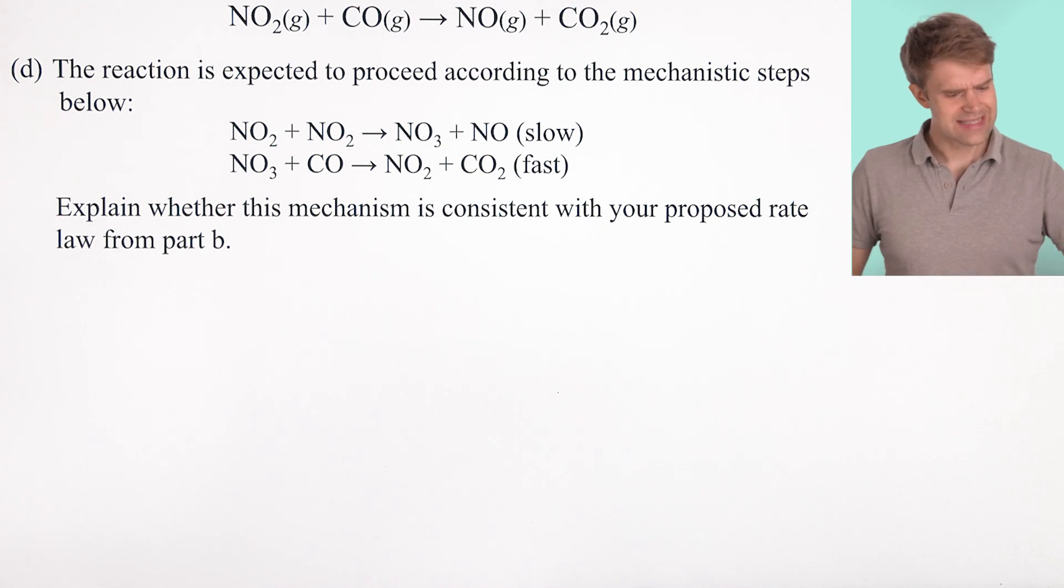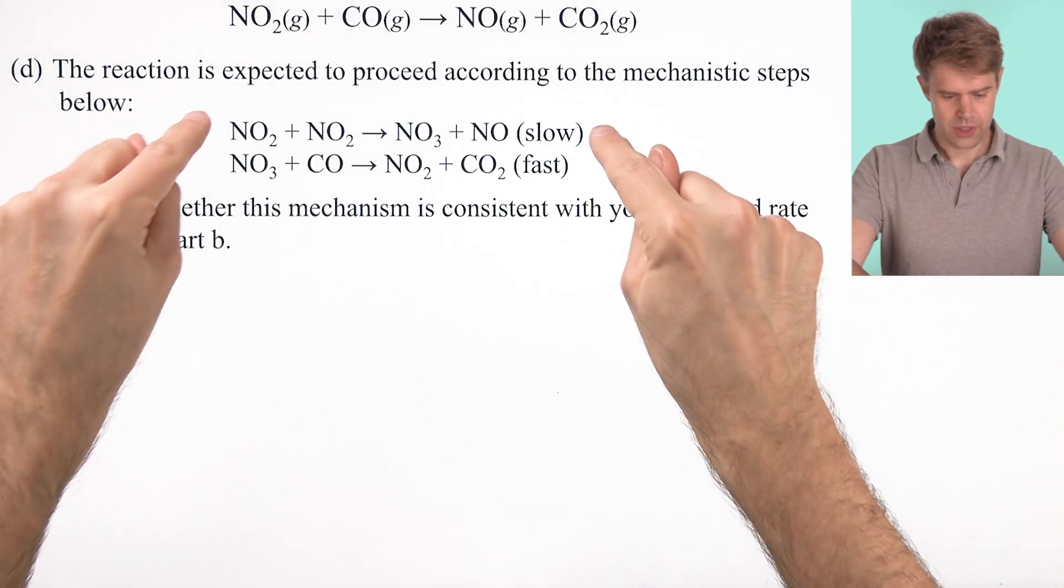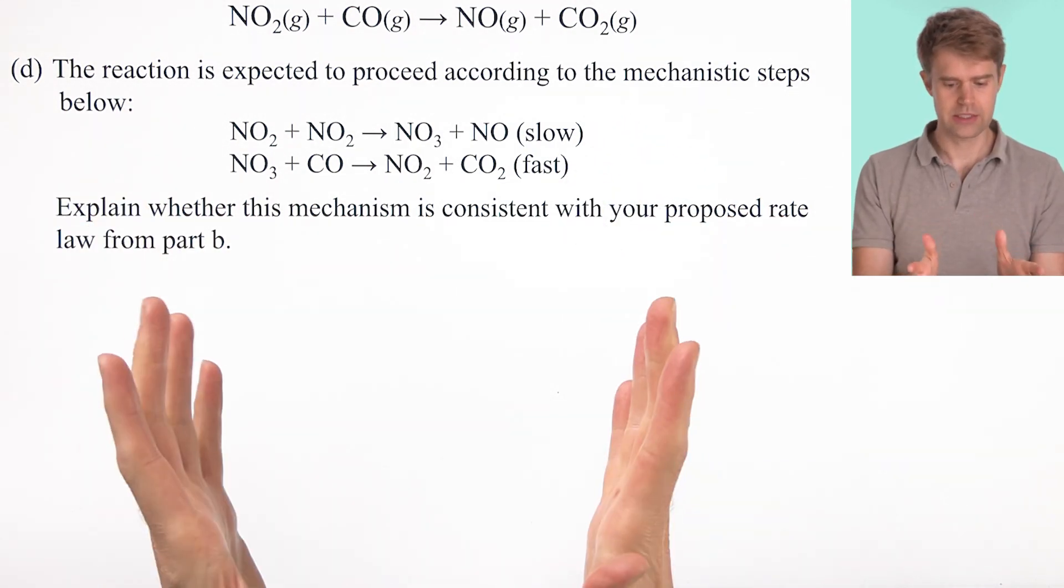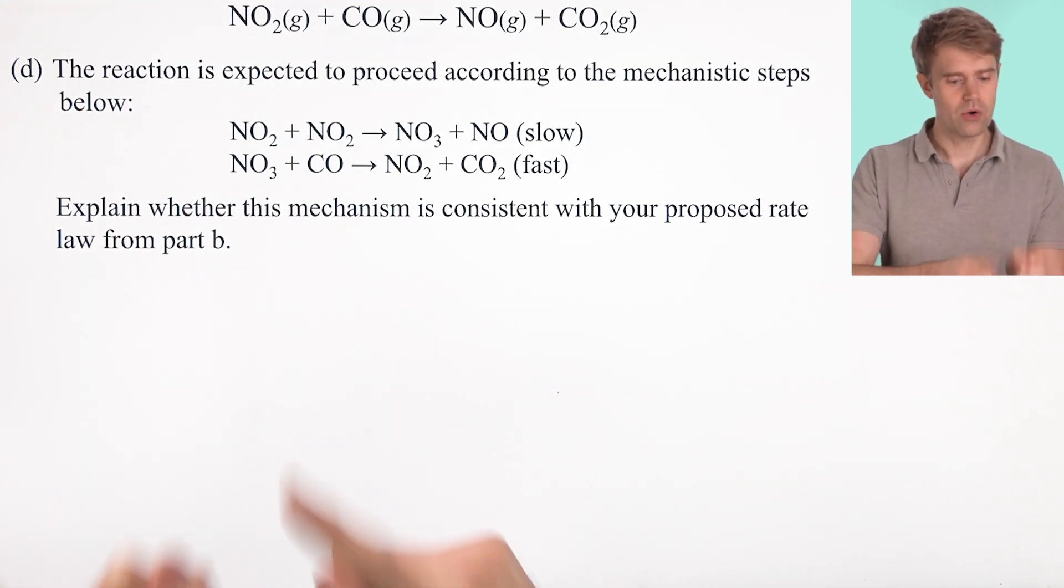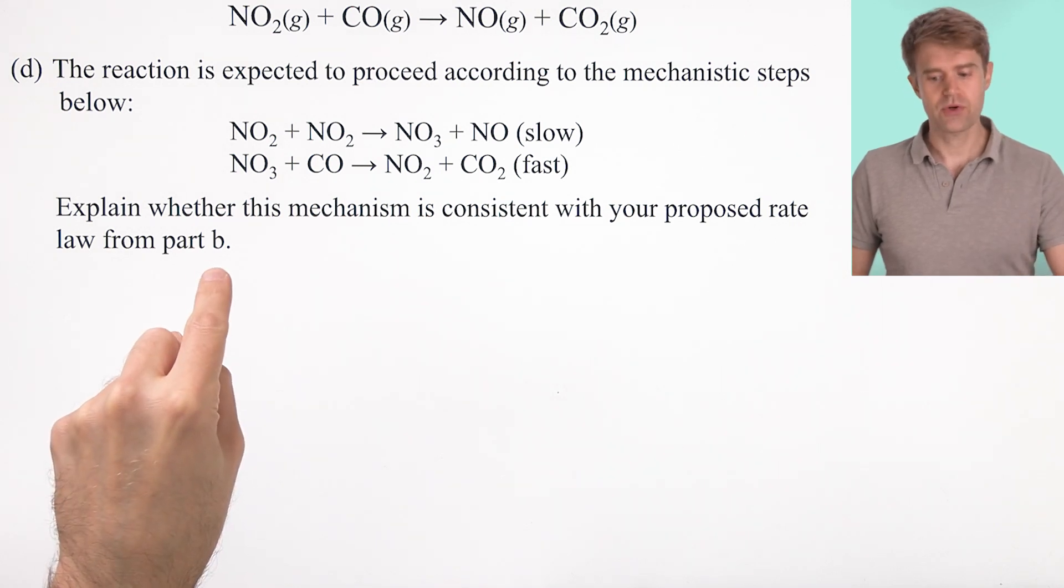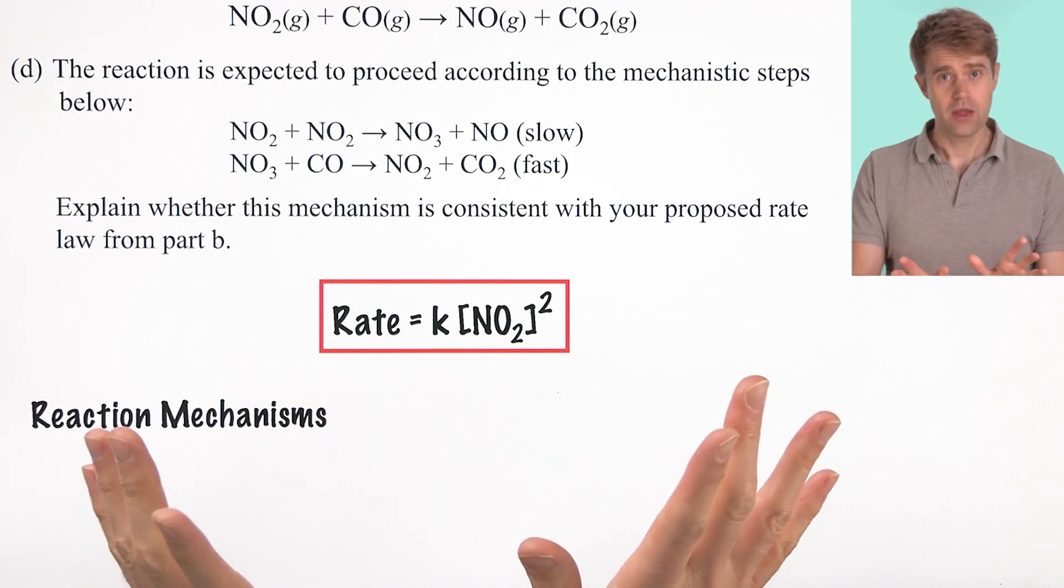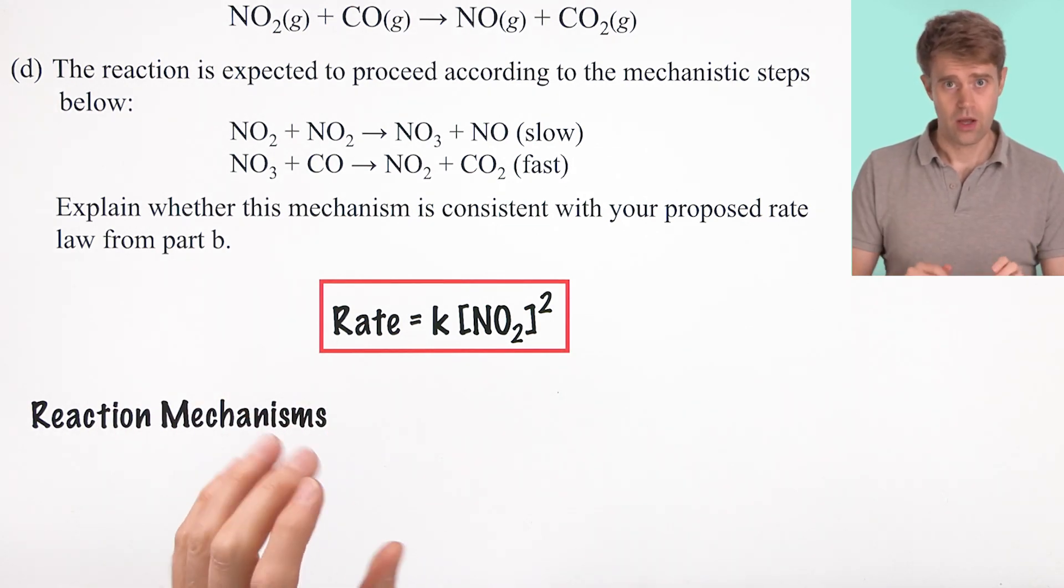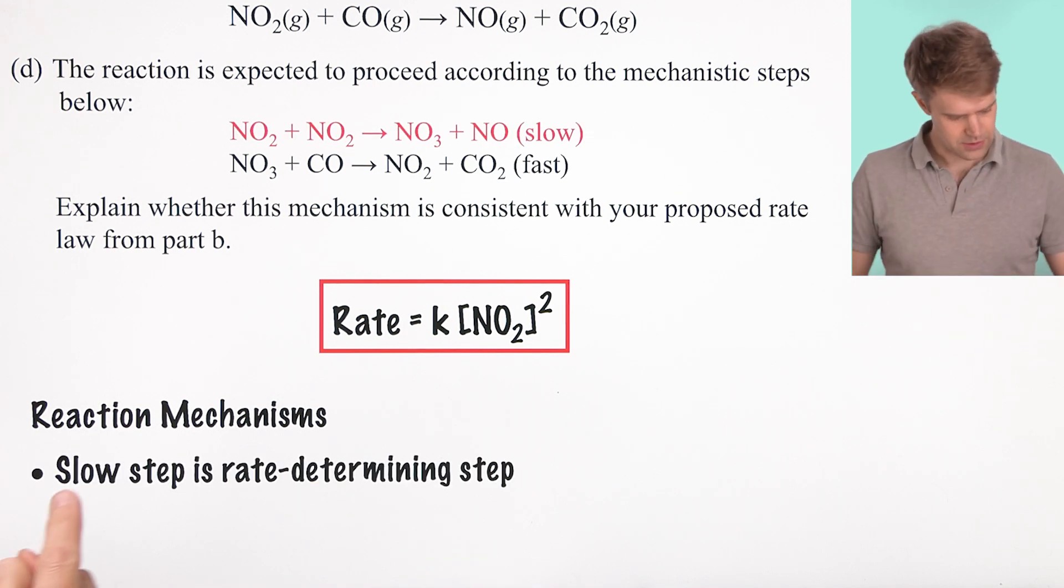Part D is about reaction mechanisms. This question proposes a two-step mechanism and asks if it's consistent with the rate law that you proposed or you determined back in part B. So first things first, let's bring back that rate law. There it is. Now, there are a few things you need to know about reaction mechanisms on the AP exam.